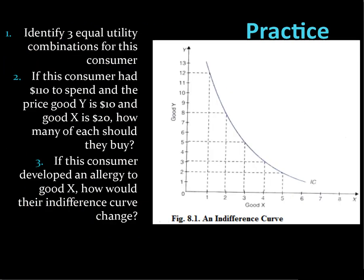So you can do this for practice: identify three utility combinations for a consumer who has $110 to spend, where good Y is $10 and good X is $20. How many of each should they buy? You're going to draw a budget constraint. And if the consumer develops an allergy to good X, how would that change their indifference curve? They're no longer enjoying good X as much.